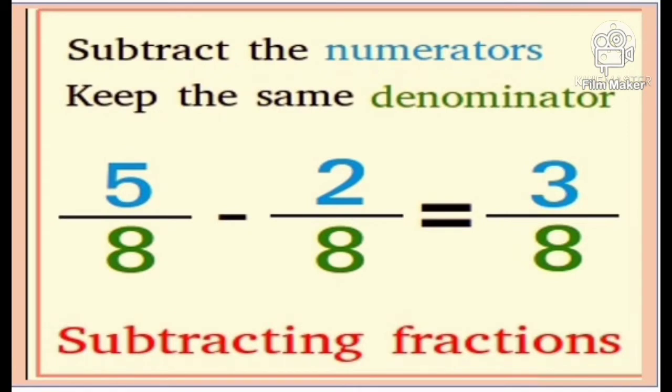To subtract similar fractions: subtract the numerators and keep the same denominator. 5 eighths minus 2 eighths is equal to 3 eighths.